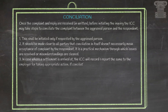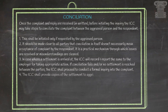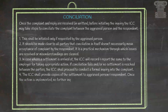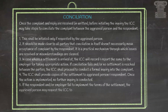In case a settlement is arrived at, the ICC will record and report the same to the employer for taking appropriate action. If conciliation fails and no settlement is reached, the ICC shall proceed to conduct a formal inquiry into the complaint. The ICC shall provide copies of the settlement to the aggrieved person and the respondent. Once the action is implemented, no further inquiry is conducted. If the respondent or employer fails to implement the terms, the aggrieved person may request the ICC to conduct a formal inquiry.